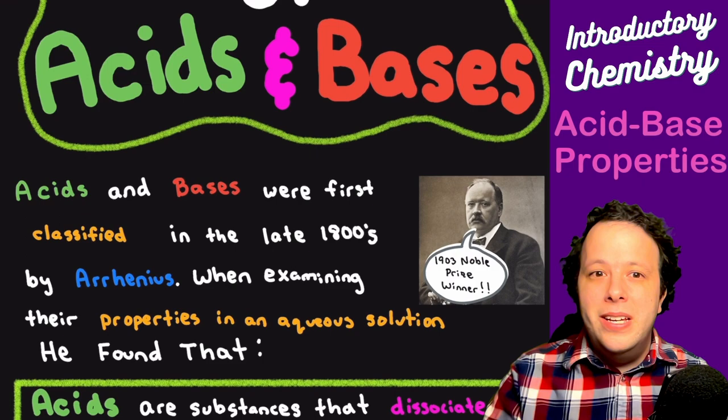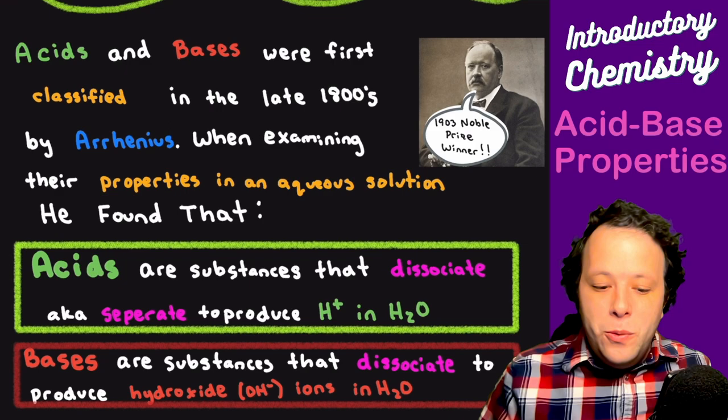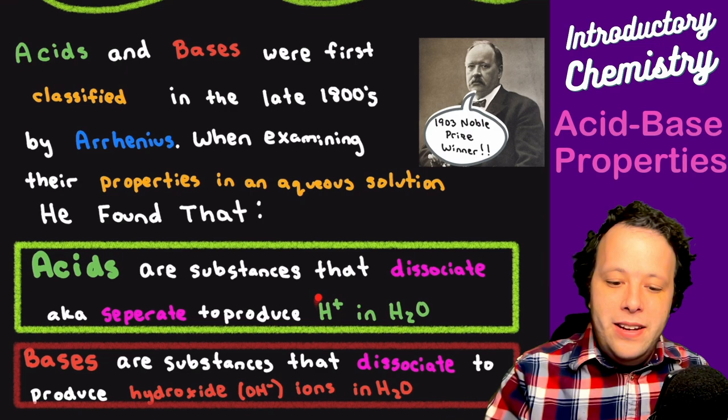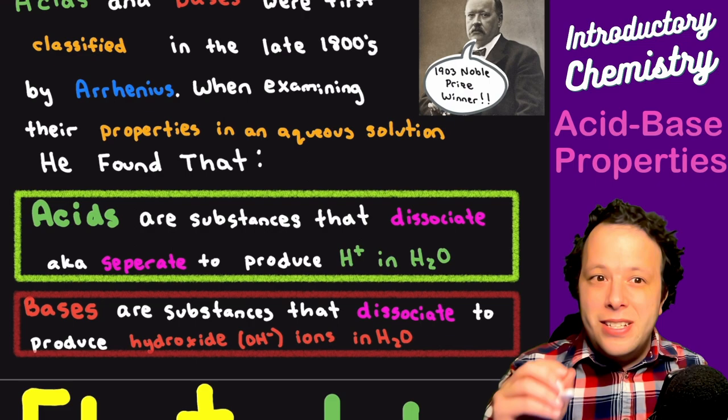What he noticed was that acids are substances that dissociate or break apart when they are in water. When those things break, they tend to produce H+ in water, which is one of the most important parts. So producing H+ denotes an acid, and a base is something that dissociates and produces hydroxide or OH-.